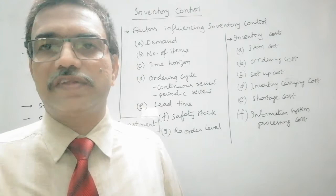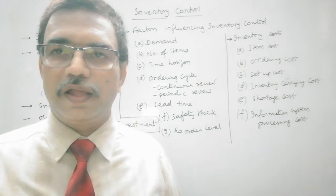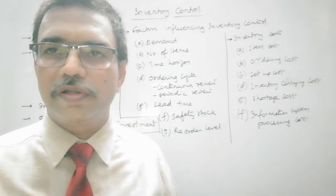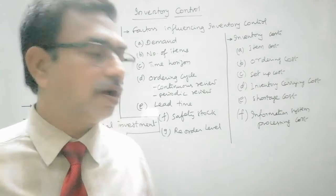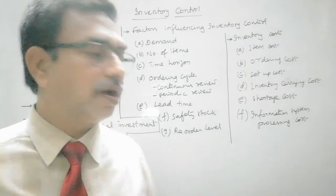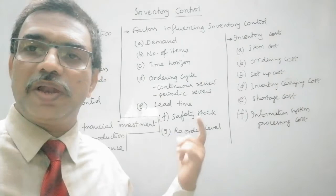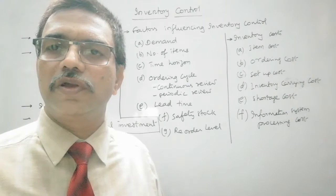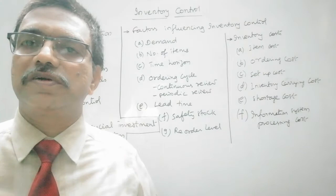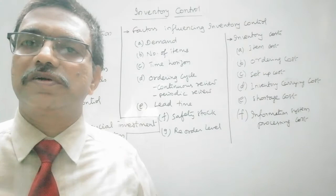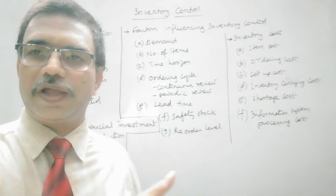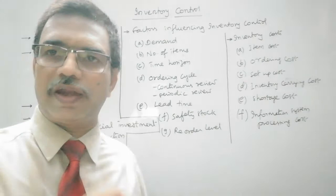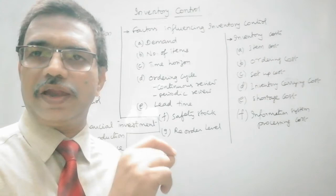Then safety stock. For every material there will be minimum and maximum levels. The minimum level is decided based on lead time — shorter the lead time, the minimum quantity will be less; longer the lead time, the minimum stock level will be more. We maintain a safety stock in order to meet unexpected demand or delays in lead times. Then reorder level — the level of stock which is consumed during the lead time. Once the material reaches that reorder level, it indicates that we have to place an order.